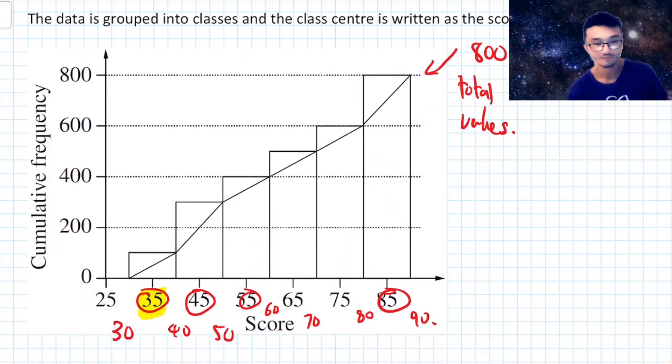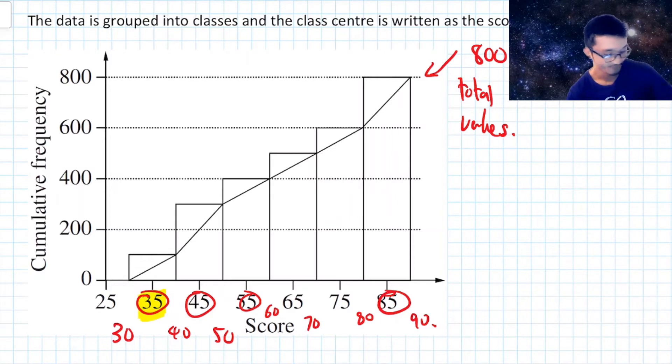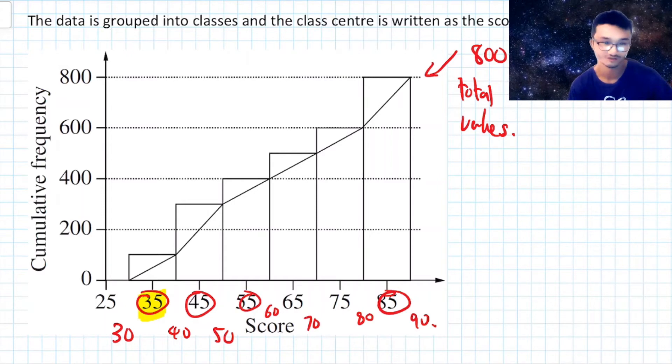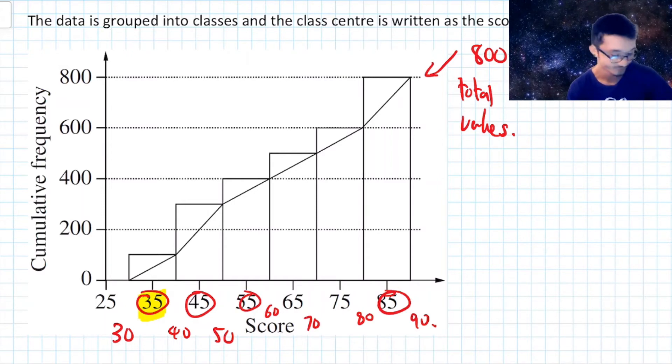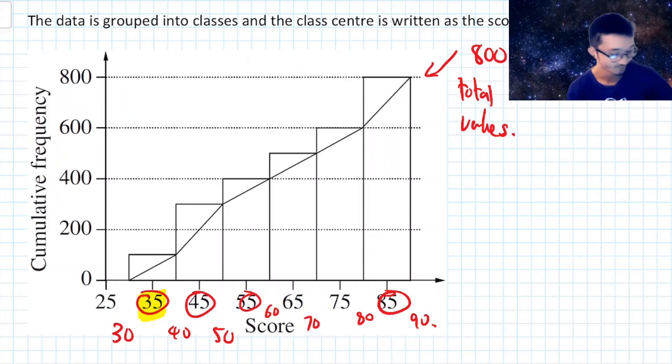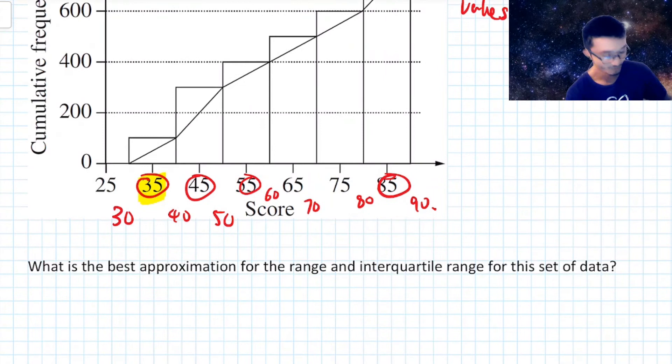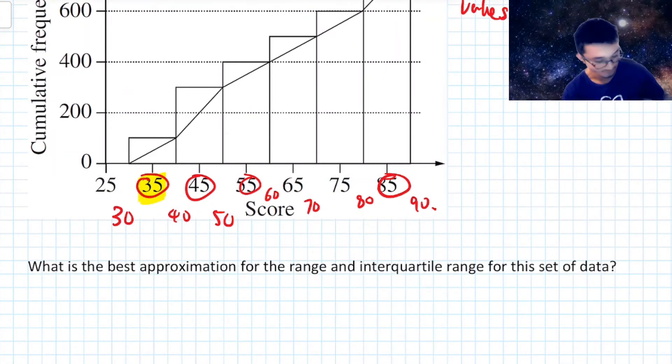So the thing about this one is, again, it's an approximation. So 30 may not occur in this data set, but when we have the cumulative frequency histogram written this way, that's the best estimation that we have. So we say that between 30 and 40, there are 100 scores. That's the approximation for that, which brings us to the question, what is the best approximation for the range and interquartile range for the set of data?